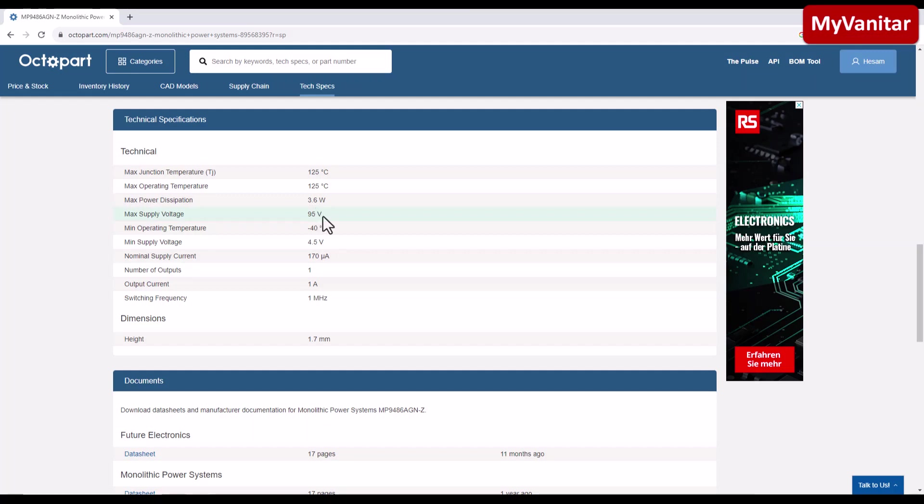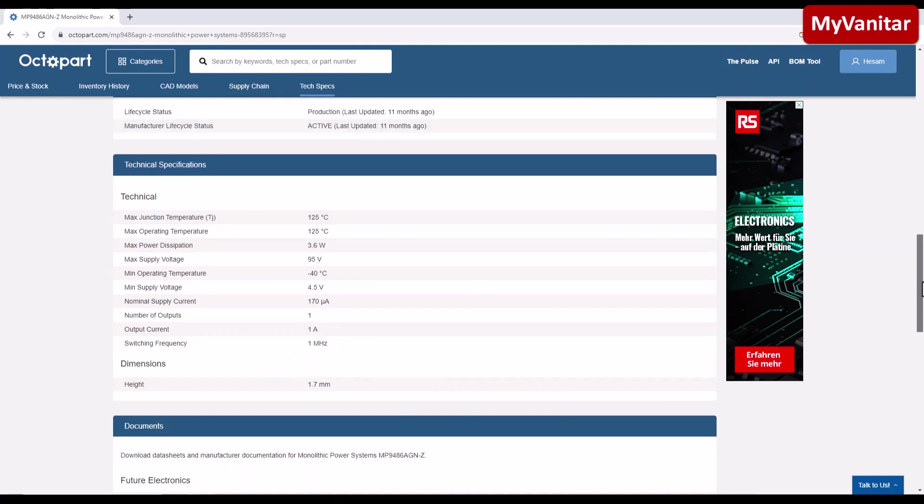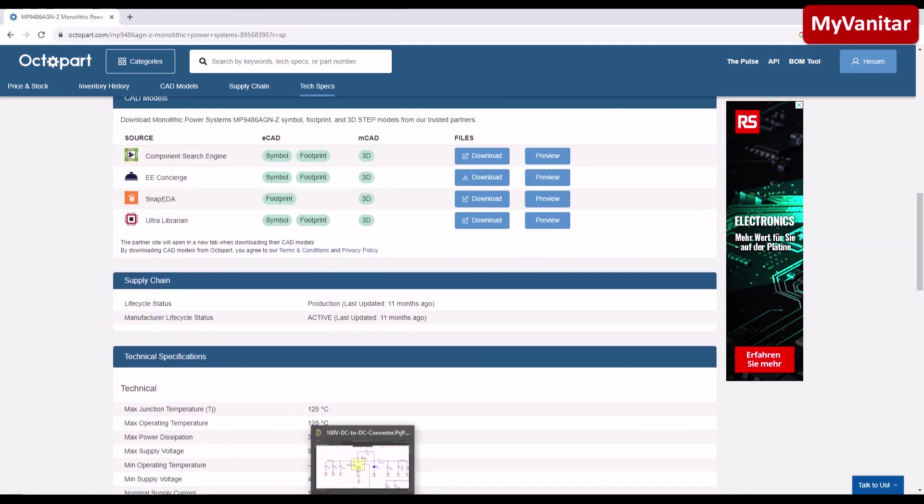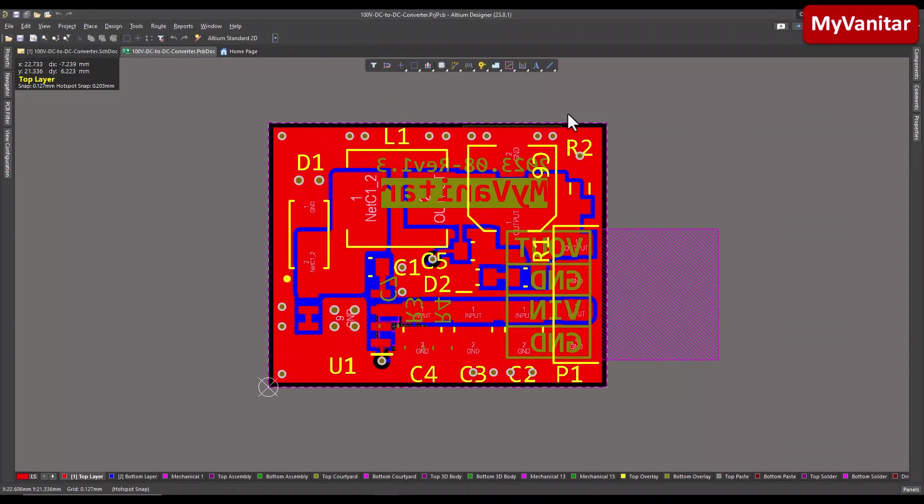And the max supply voltage is 95. This is the maximum recommended voltage. However, for a short time, we can go up to 100. However, for a long run, try to not go higher than 95 as it is mentioned here. And this is the power dissipation 3.6 watts and etc. The switching frequency 1 megahertz. Anyway, let's go to the PCB.